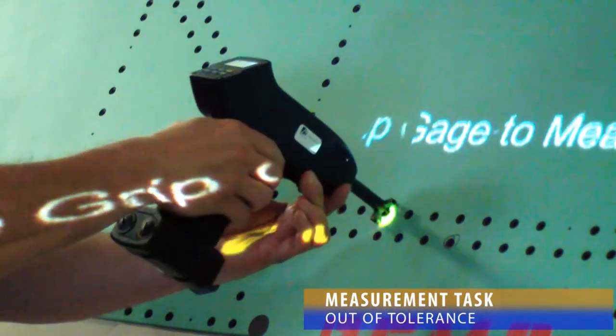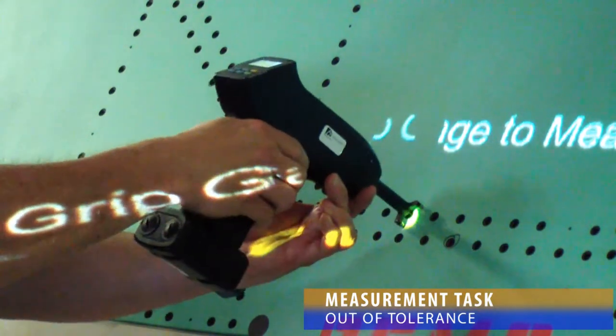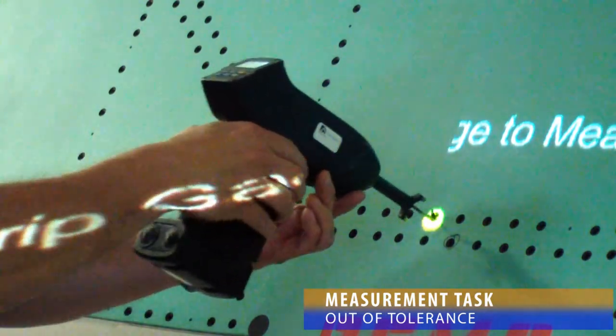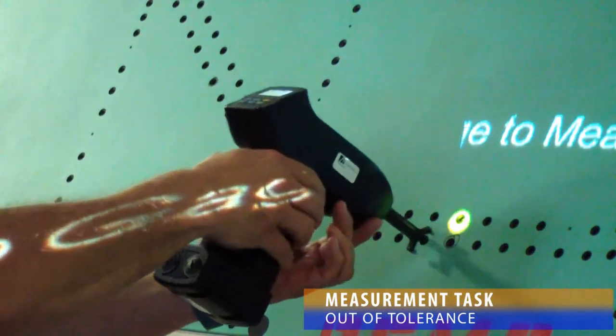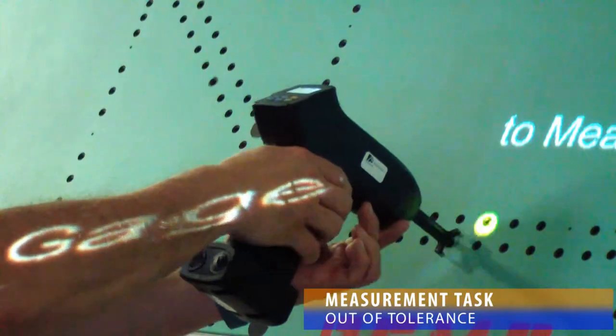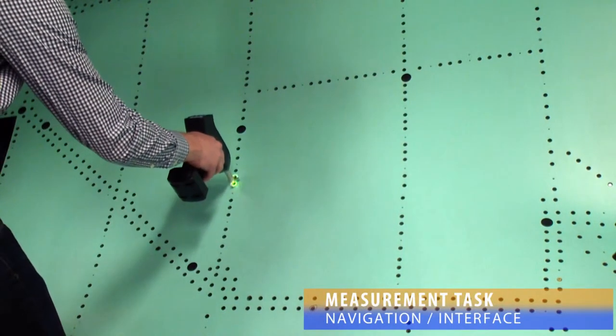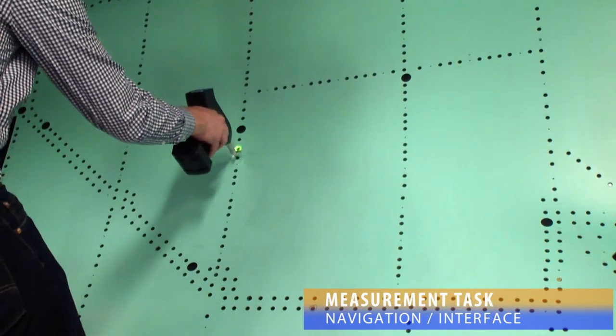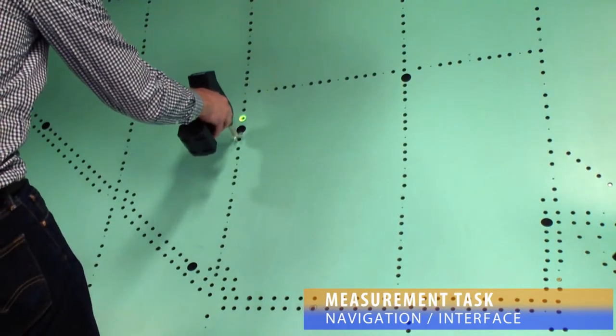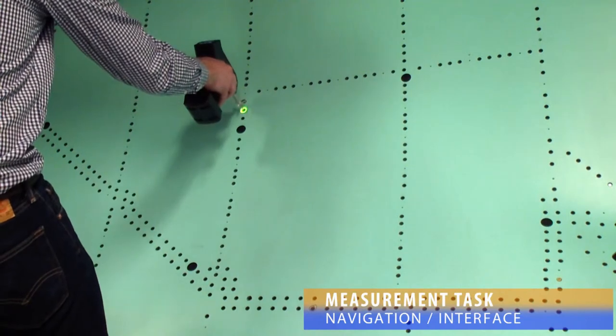If the measurement cannot achieve an in-tolerance value, the technician may choose to skip the measurement and return to it later, or enter a manual value. The technician's primary method of navigation within a measurement task will be the completion of an in-tolerance measurement. When in-tolerance measurements are performed, the system automatically steps the user to the next location.